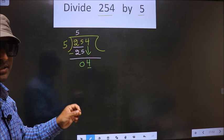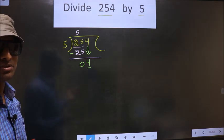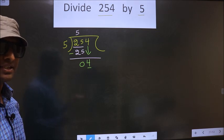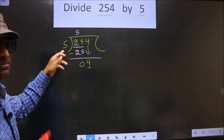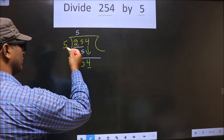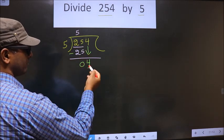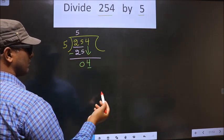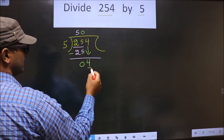Instead, what you should think of is, to this number what should you multiply to get a number here? If you multiply by 1, you get 5, which is larger than 4. So what we do is we multiply by 0. 5 into 0 is 0.